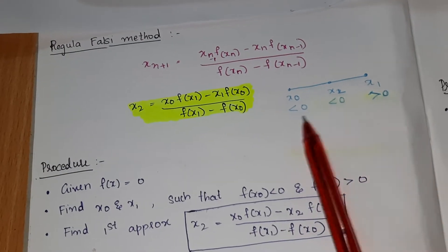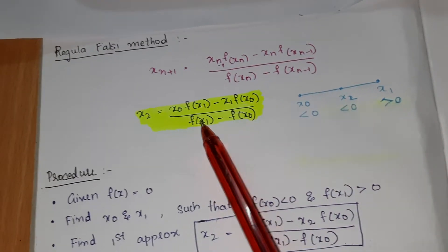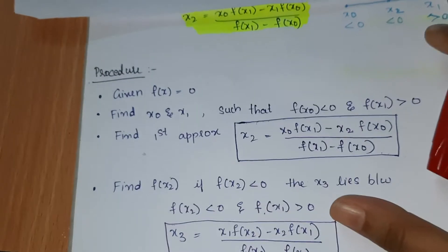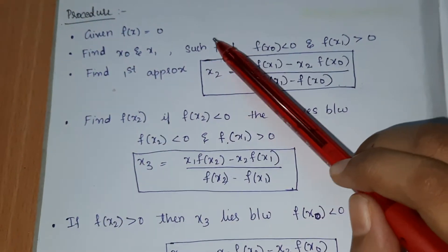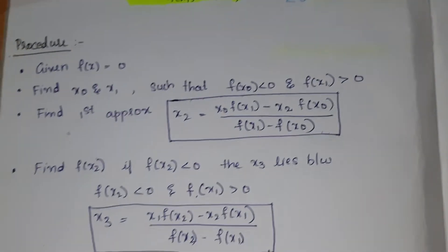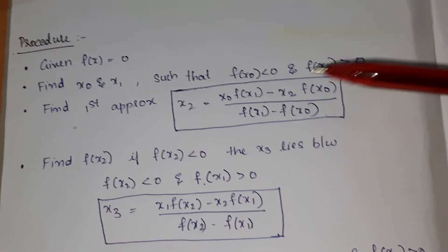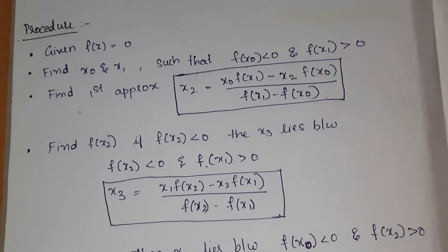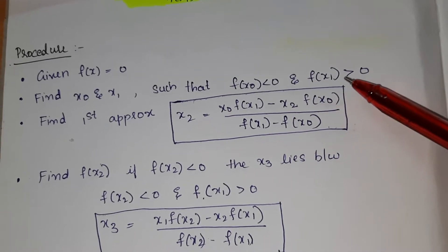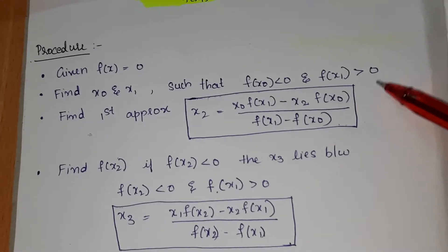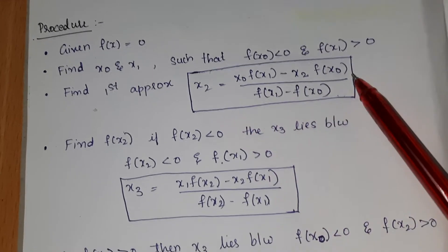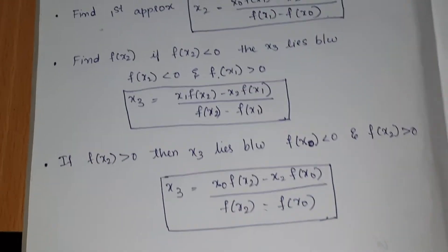This method is also slightly similar to the bisection method — here you need to check the signs as well, and that's how you use this formula. The procedure: first, f(x) = 0 is given. Find x0 and x1 such that f(x0) < 0 and f(x1) > 0. This condition must be satisfied before applying the formula.